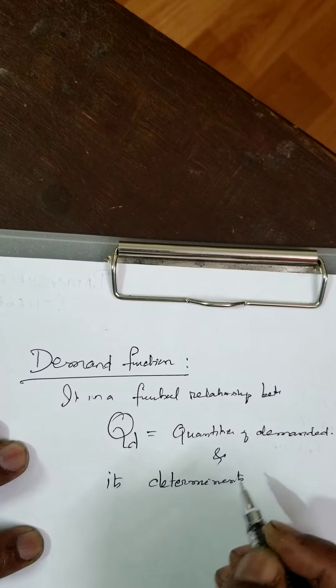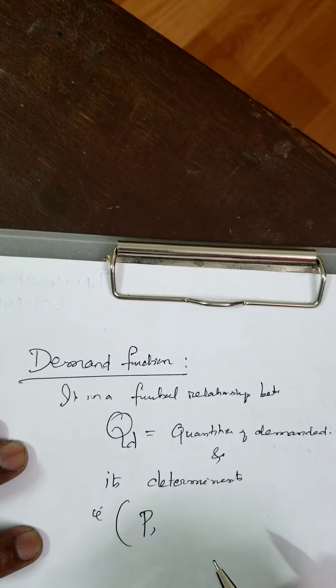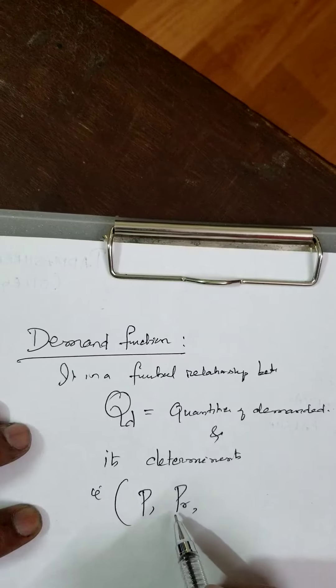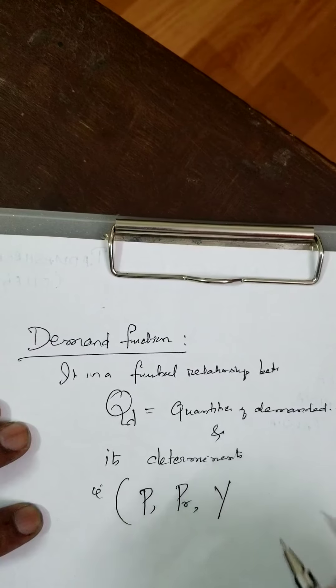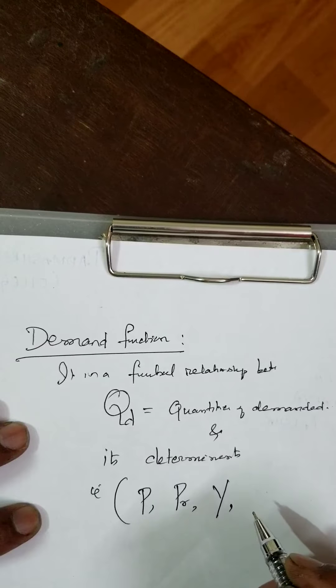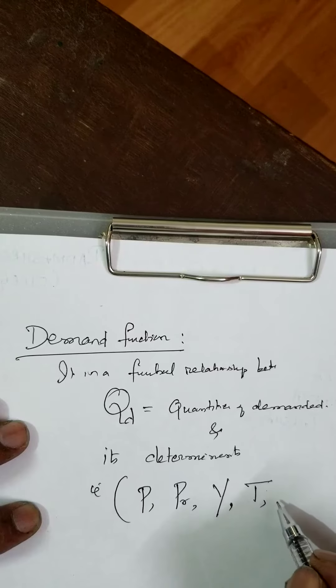What are determinants? That is price, price related substitutes, and Y which is income or income of the consumer. And T - T is taste, preference, etc.